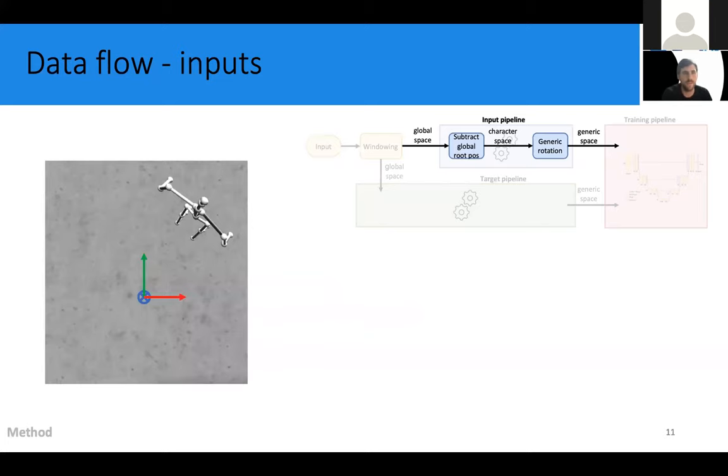Now the input processing essentially consists of two steps. The first step is that we subtract the root position from the data to obtain joint positions with respect to the character's root. This would be how the IMU suit would see the data or would generate the data.